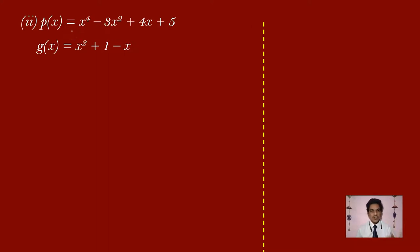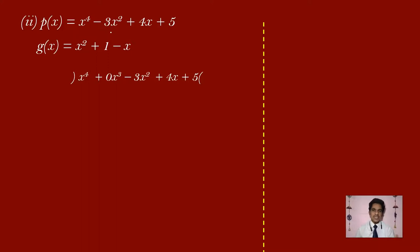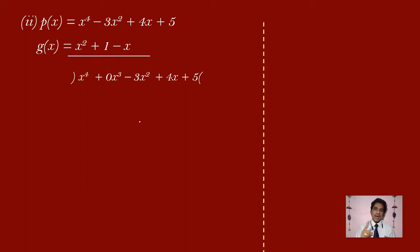The degree is 4, so we need x power 4, x power 3, x square, x, and constant terms. But x cube term is missing. So when writing the dividend, we write: x power 4 plus 0x cube minus 3x square plus 4x plus 5. Now look at the divisor x square plus 1 minus x. In standard form, x square term comes first, so the divisor becomes x square minus x plus 1.